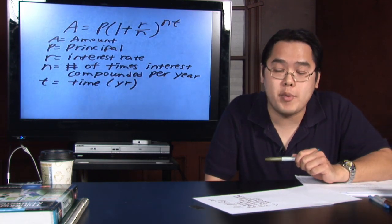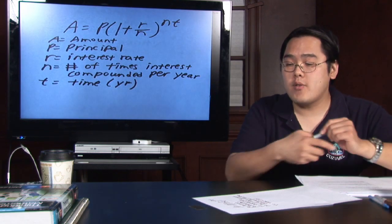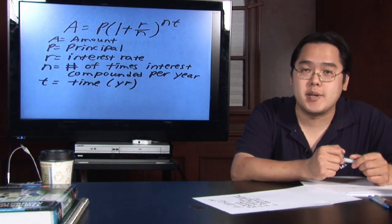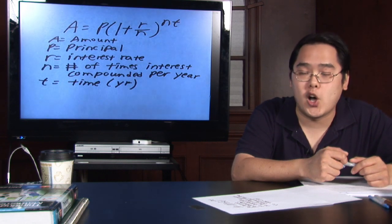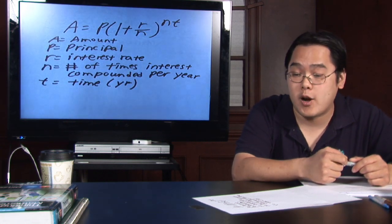Here's the common formula that we'll be exploring today. You have a rather involved formula over there: A equals P times, in parenthesis, one plus R over N to the Nt power.